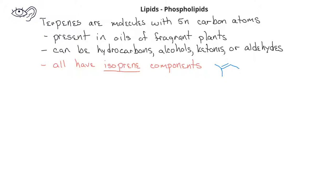Let's look at a few different molecules that are terpenes. Menthol, or peppermint oil, is a terpene that has two isoprene units. It's a derivative of cyclohexanol, but as we see here, we can break it down into two different five-carbon units, where each five-carbon unit is essentially an isoprene unit.